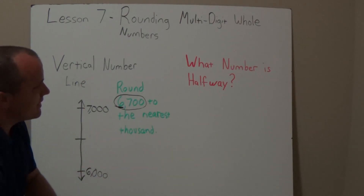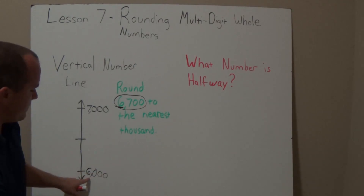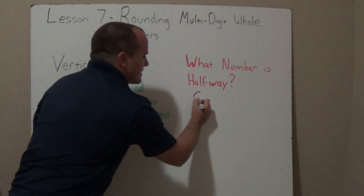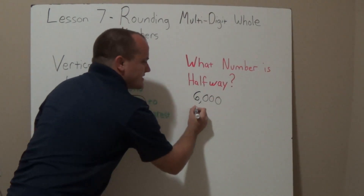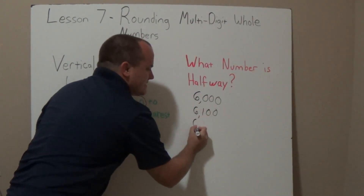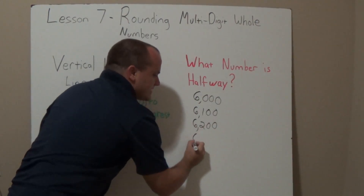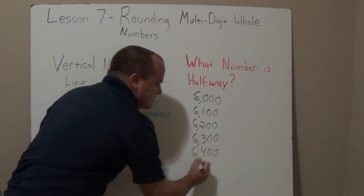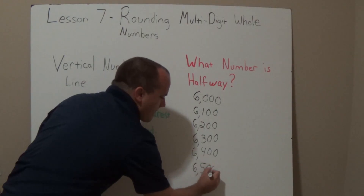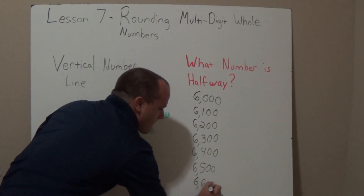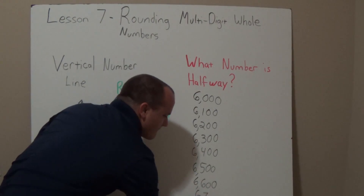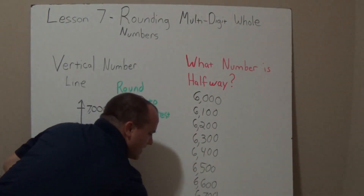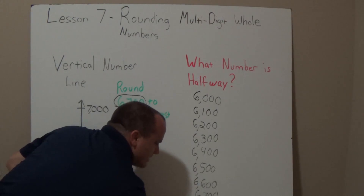Now I have another line right in the middle — I have to find the halfway point between 6,000 and 7,000. I'm going to write my numbers using the hundreds place, starting at 6,000 all the way to 7,000: 6,000, 6,100, 6,200, 6,300, 6,400, 6,500, 6,600, 6,700, 6,800, 6,900, and 7,000.